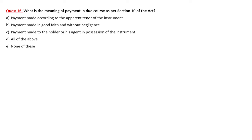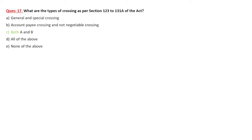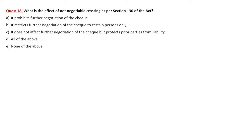What is payment in due course? Payment in due course means payment made according to the apparent tenor of the instrument — as written, whether one month, two months, ten days — made in good faith without negligence, and made to the holder or his agent in possession of the instrument. What are the types of crossings? General crossing, special crossing, account payee crossing, and non-negotiable crossing. Account payee crossing means the amount is to be paid into an account — no cash payment. Non-negotiable means the instrument cannot be negotiated further.